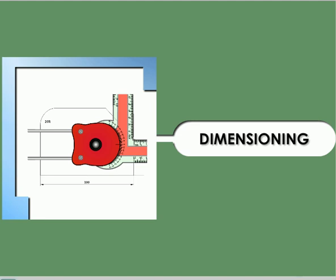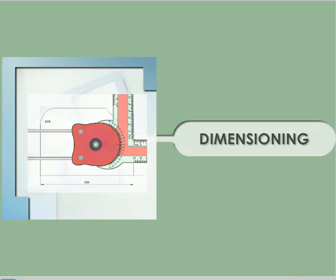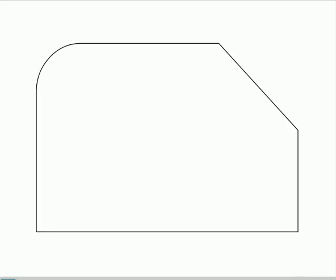Dimensioning. The representation of a single dimension includes the dimension line, extension lines, outline, and the dimension value.